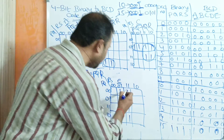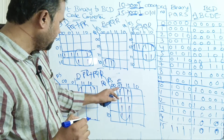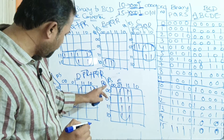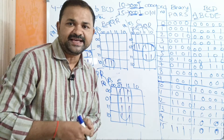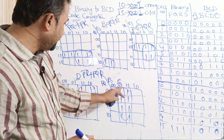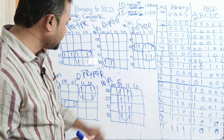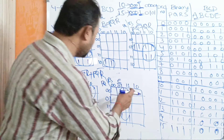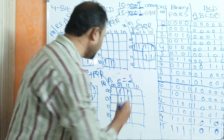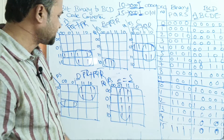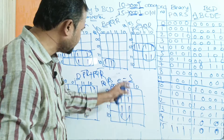Now let us simplify E. Here PQ values are changing, so there is no need to consider them. If we observe these 2 cells, the second variable S is common. So the simplified expression for E is S.